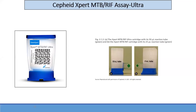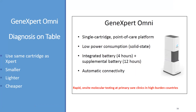Regarding the Ultra cartridge, there is a 50 ml tube and a 25 ml tube visible. The PCR tube is bigger, so it takes more DNA and therefore provides greater sensitivity. Omni was a platform developed some time back; it is not extremely popular. It is a single-cartridge, battery-operated device meant to be placed on a table in an OPD so a patient can be tested there. It has four hours of battery life and automatic connectivity.